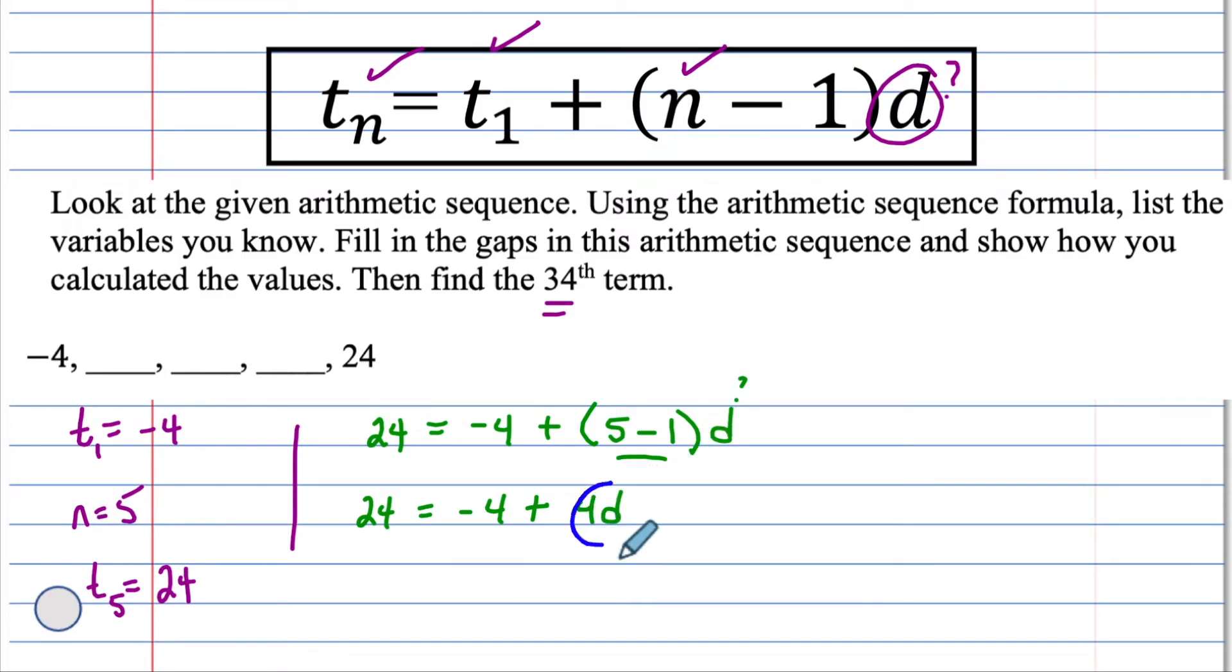My little trick is, circle that value with the D. Now you have a negative 4 here. If you make that a 0, you'll get this 4D by itself. How do you make this a 0, or a 0 pair? Add 4. What you do to one side of an equation, you have to do to the other. Now what we have is 28 equals 4D, because this makes a 0 pair.